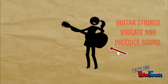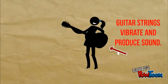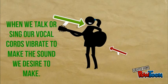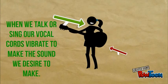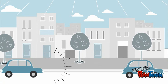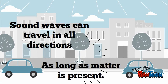Everything that makes noise causes vibration. Guitar strings vibrate to produce sound. When we talk or sing, our vocal cords vibrate to make the sound we desire to make. Who knew American Idol had so much science involved? Sound waves can travel in all directions, as long as matter is present. That's why it's so quiet in space.